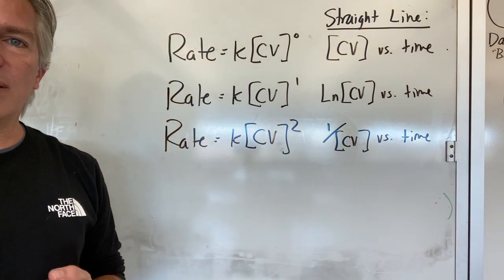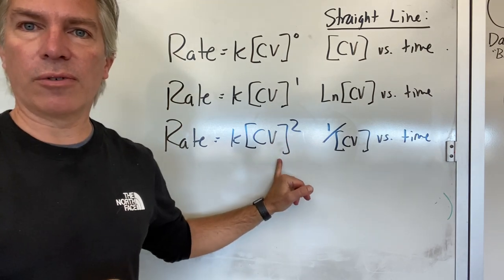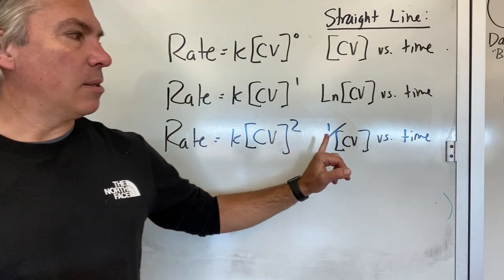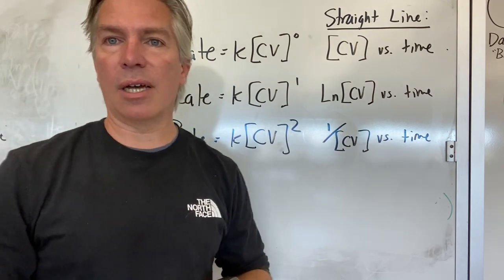However, if the reaction is second order, dependent on the square of the concentration of crystal violet remaining at any given time, then my plot of inverse crystal violet versus time will give me a straight line.